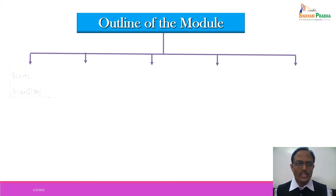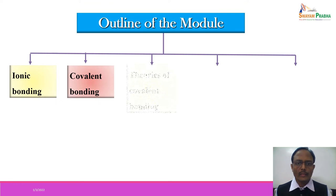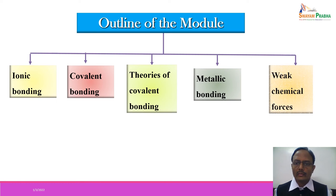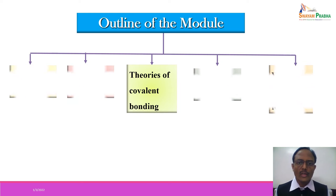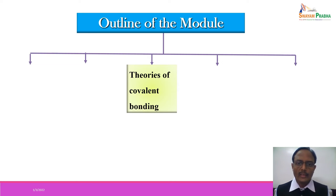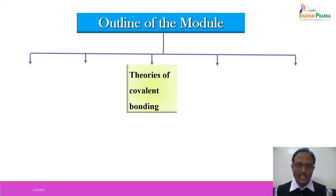The outline of this module is Ionic Bonding, Covalent Bonding, Theories of Covalent Bonding, Metallic Bonding, and in the end we will discuss about Weak Chemical Forces. In this lecture, continuing with the theories of covalent bonding, in previous lectures we have discussed about valence bond theory, molecular orbital theory, and VSEPR theory. Now a few miscellaneous topics related to all these discussed theories will be covered in this particular lecture.